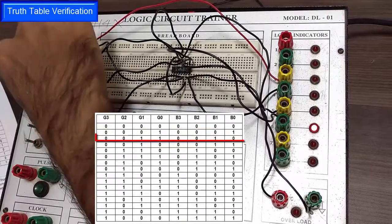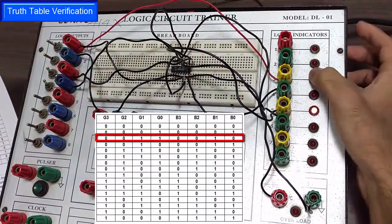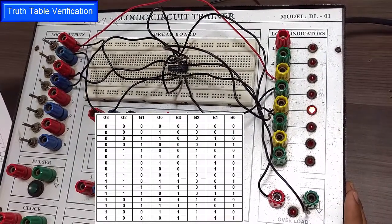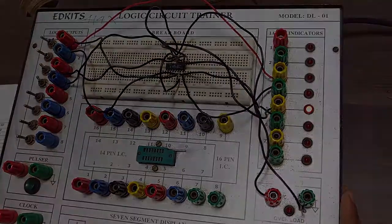And for G1 as 1, we are getting 0010. In a similar manner you can verify the entire truth table. That's all for today. Thanks for watching.